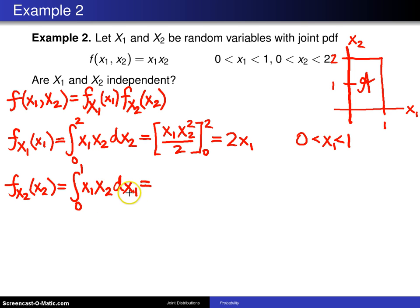x2 is constant with respect to x1. The integral of x1 is x1 squared divided by 2, evaluated from 0 to 1. When you plug in 1 for x1, you get x2 divided by 2. When you plug in 0, you get 0. So there is the marginal distribution, and x2 can range from 0 to 2.